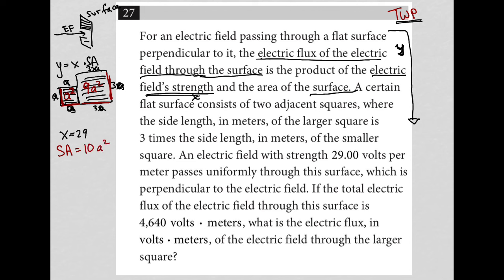So 29 volts per meter passes uniformly through this surface, which is perpendicular to the electric field. If the total electric flux of the electric field through this surface is 4640, so that's saying Y equals 4640, because Y was the electric flux of the electric field through the surface. What is the electric flux? Well, I know this equation: Y equals X times SA.